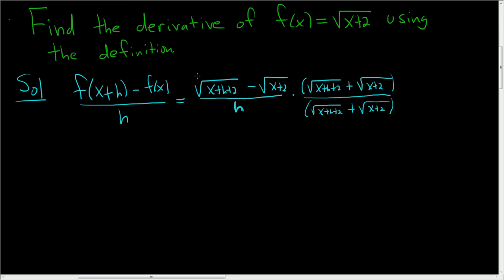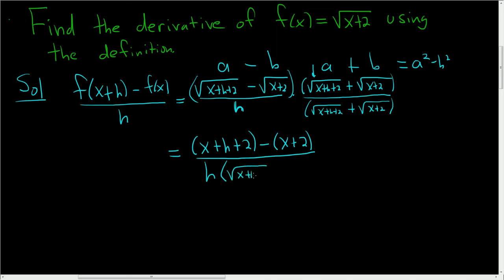All right, so here we're going to use the difference of squares formula. This is a minus b, a plus b. This will give us a squared minus b squared. So this is going to end up being, well when you square the a, the square root goes away, so you just get x plus h plus 2 minus parentheses x plus 2. And again, the square root does go away. So you end up with h parentheses square root x plus h plus 2 plus the square root of x plus 2 parentheses.